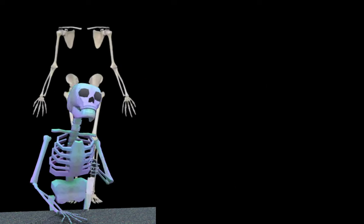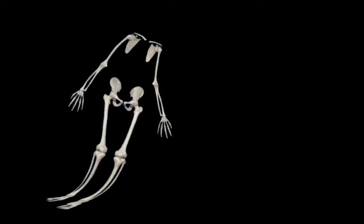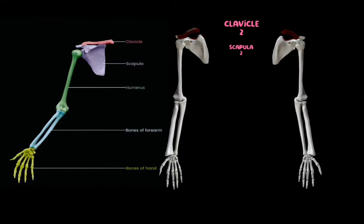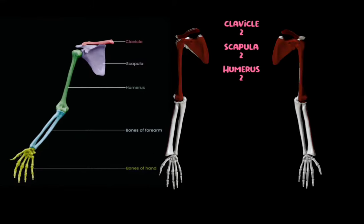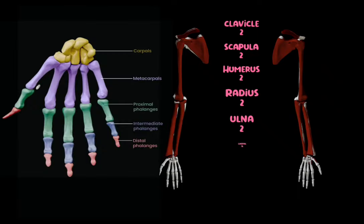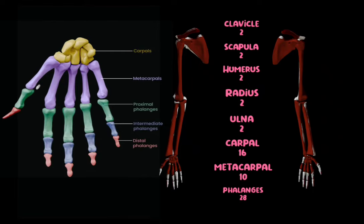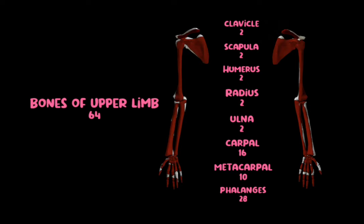Now let us discuss the bones of the appendicular skeleton. In the appendicular skeleton you have 2 clavicles, 2 scapulae, 2 humeri, 2 radius, 2 ulna, 16 carpal bones, 10 metacarpal bones, and 28 phalanges. That makes the total number of bones in the upper limb 64.